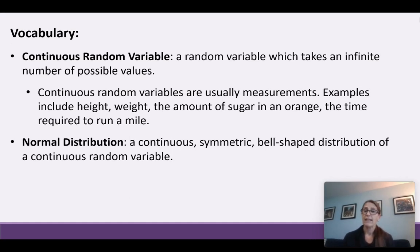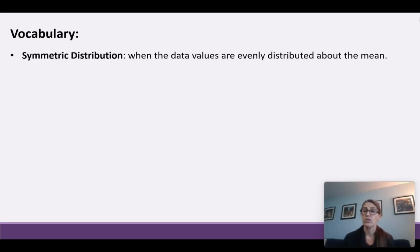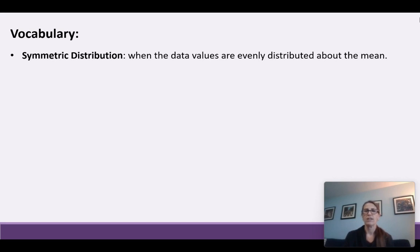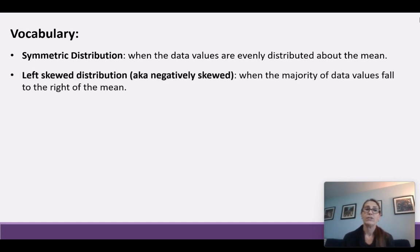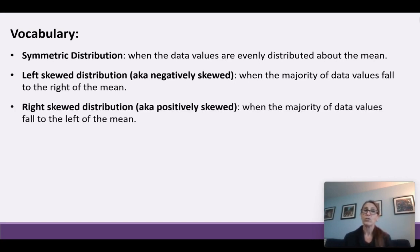The normal distribution is a continuous, symmetric, bell-shaped distribution of a continuous random variable. We've seen symmetric distributions before — when the data values are evenly distributed about the mean, you can fold it in half and get mirror images of each side. A left-skewed distribution, also called negatively skewed, is when the majority of data values fall to the right of the mean. A right-skewed distribution, or positively skewed, is when the majority fall to the left of the mean.